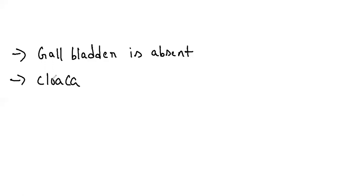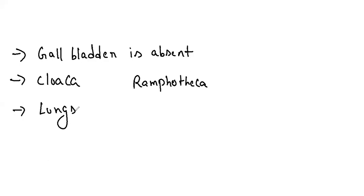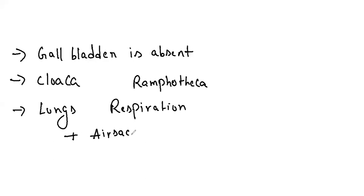An epidermal horny sheath is present on the beak, which we call rhamphotheca. We have spongy lungs for respiration. Air sacs are also attached with the lungs, forming the accessory respiratory organ that helps for flying.